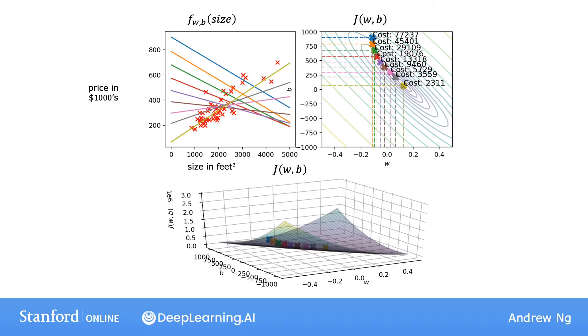We're going to use this to fit a model to the housing data, and you can now use this f of x model to predict the price of your client's house or anyone else's house. For instance, if your friend's house size is 1250 square feet, you can now read off the value and predict that maybe they could get $250,000 for the house.